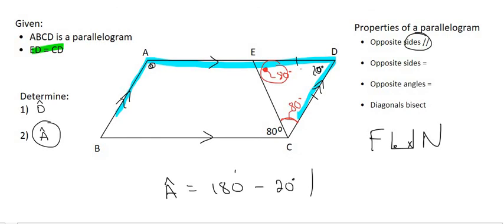The reason for that is co-interior angles. So we say co-int angles, and the two sides that are parallel is DC parallel to AB. Therefore, angle A is going to have a value of 160 degrees.